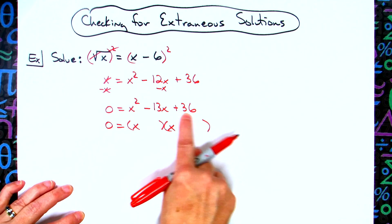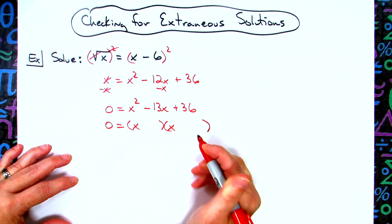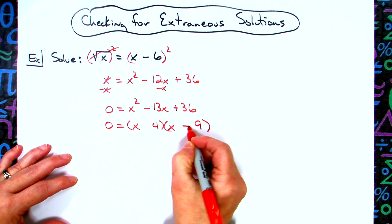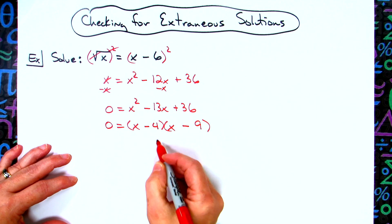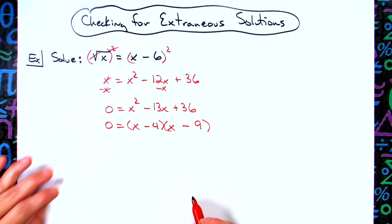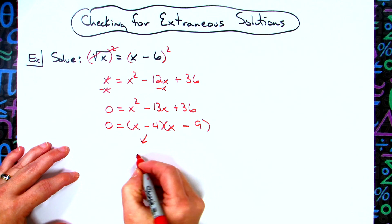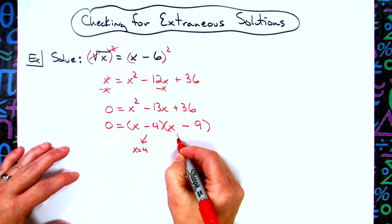We need a positive 36 here and a negative 13 in the middle. 9 times 4 is 36. If I make them both negative, that'll give me the negative 13 in the middle and the positive 36 there. From there we set everything equal to 0, so this will give us x = 4, that'll give us x = 9.